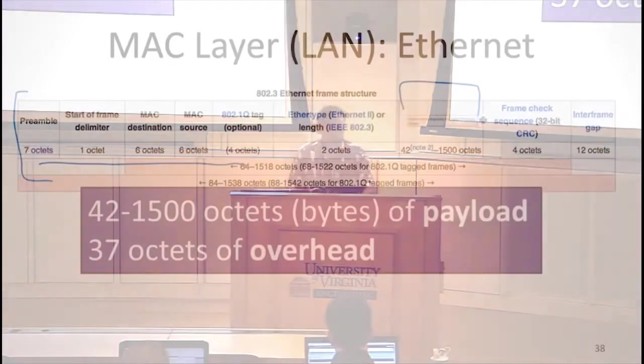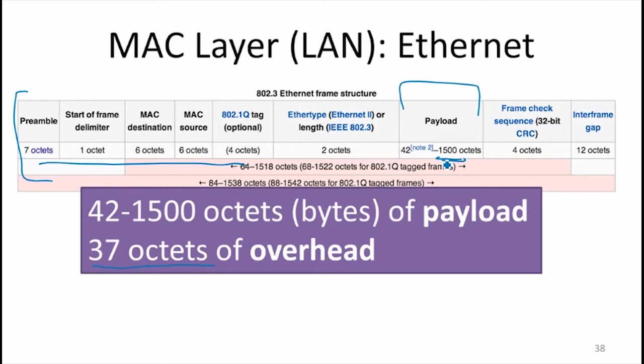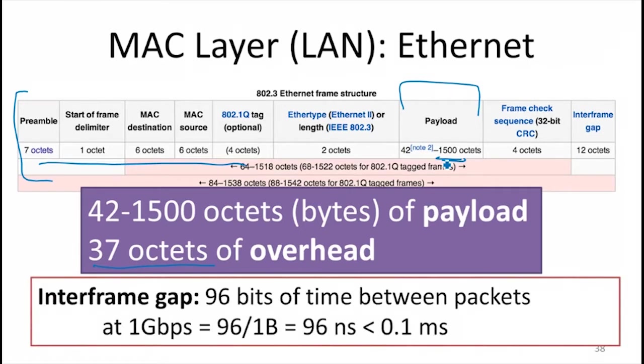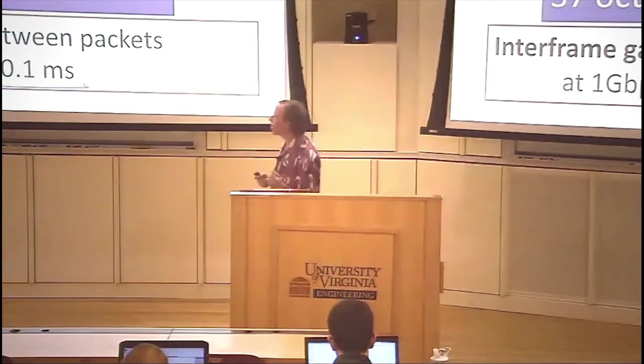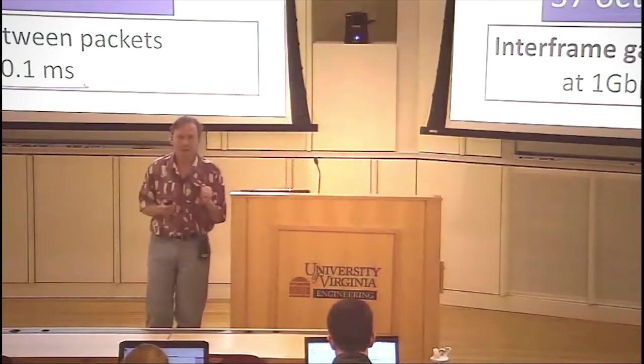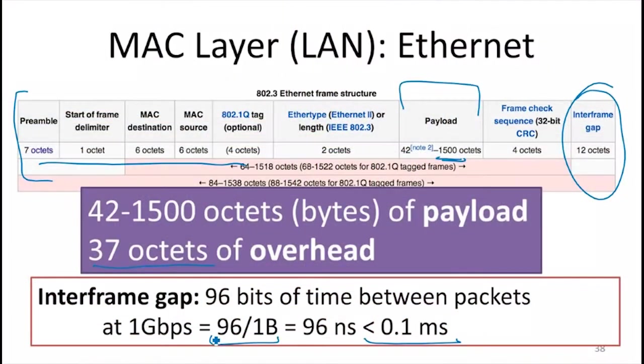The overhead, if we're maximizing our payload to 1,500, is 37 octets of overhead that are necessary to direct that packet where it's supposed to go. So the overhead there is pretty low. Part of that overhead is this gap. We need a gap between packets so that the routers can keep track of which is which. We need 96 bits. The time to send 96 bits at the rate of 1 gigabit per second is just a tenth of a millisecond. So that's the time that's wasted between packets.